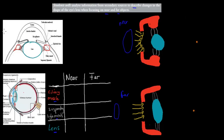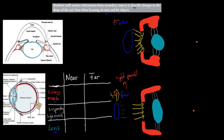When an object is far away, while it still emits light in all directions, only the light that reaches your eye is more or less parallel — so we say light from far objects is parallel, meaning it comes straight at you. Whereas for nearby objects, light comes from all sides and is not parallel, making it more divergent.